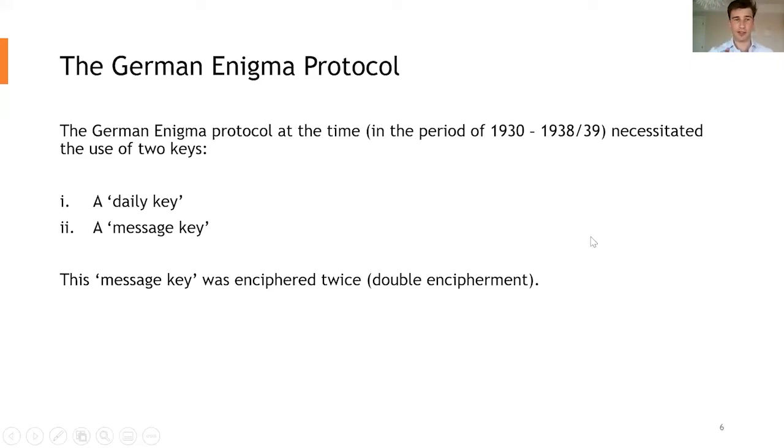So in the mid-1930s, the German protocol necessitated the use of two keys. One is called a daily key, and the second is a message key. Now this daily key was sent ahead of time in code books, it's predefined. A message key was defined by the user, so they would choose a message key at random every time an operator was sending a message. Now this message key was enciphered twice.